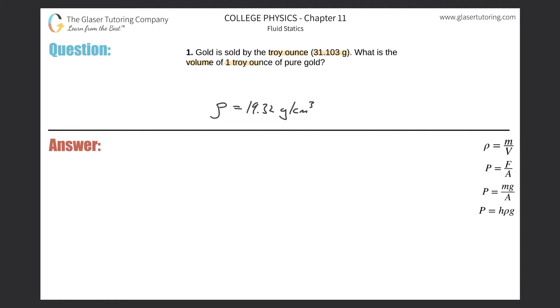To convert one troy ounce, I want to get rid of those units, so troy ounce goes on the bottom. The problem tells us that one troy ounce is equivalent to 31.103 grams, so we can write that ratio. The troy ounces cancel out.